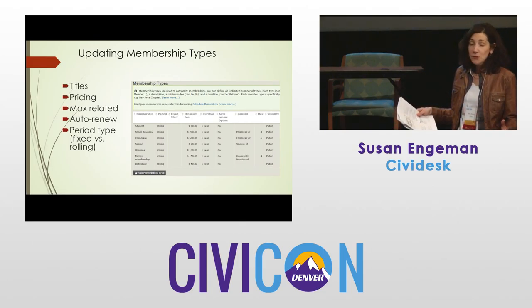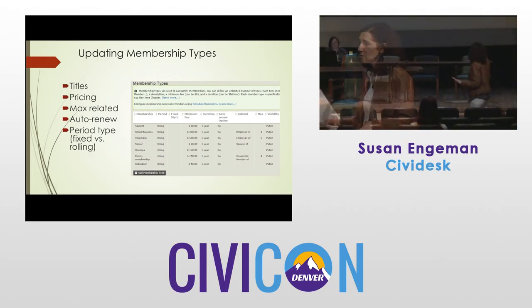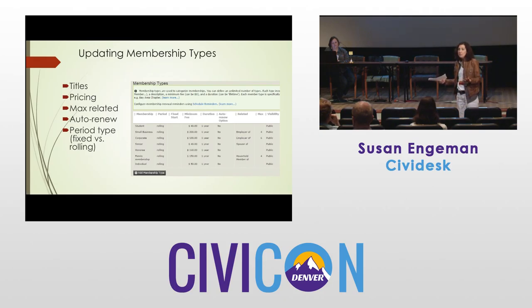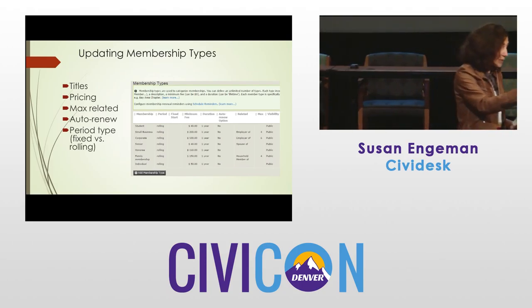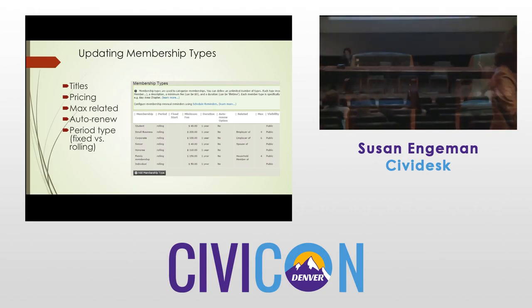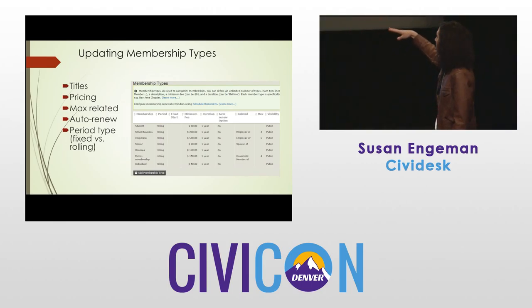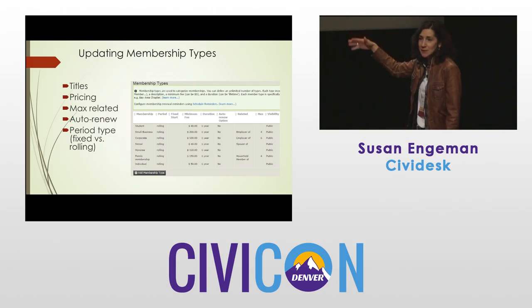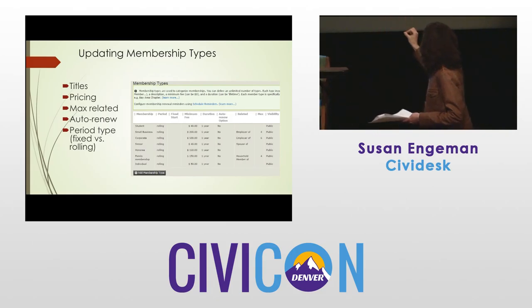The related members concept also works with households — the related members would be people in that household rather than employees. Auto renew is another option: if you have a payment processor that supports it, people can sign up online and it would automatically charge the credit card. Period type — fixed or rolling — is also configured here; in my demo I chose rolling on all of them.